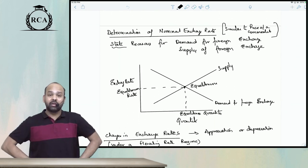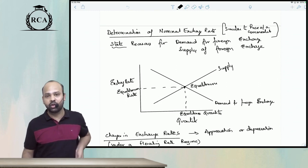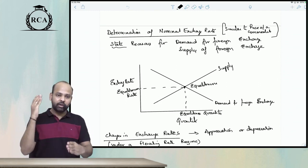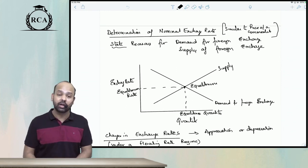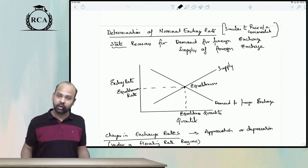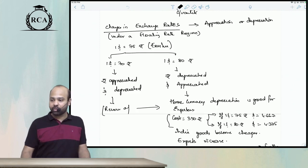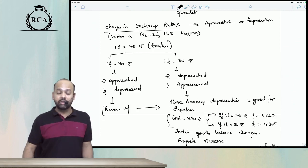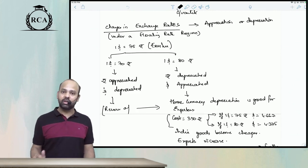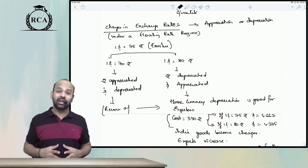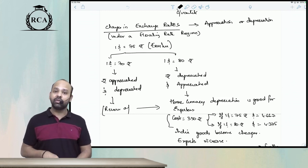To determine the nominal exchange rate, you go by market demand and supply factors — wherever market demand and supply meet is your nominal exchange rate under the floating rate regime. Regarding changes in exchange rates: when the value of a currency increases in relation to another currency due to market forces, it is called appreciation. When the value of a currency decreases in relation to another currency, it is called depreciation.